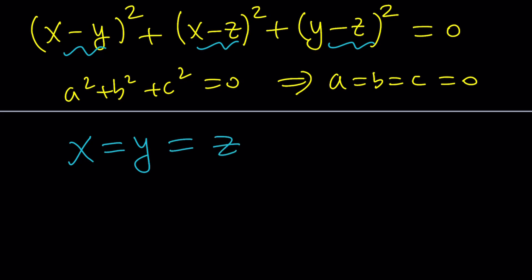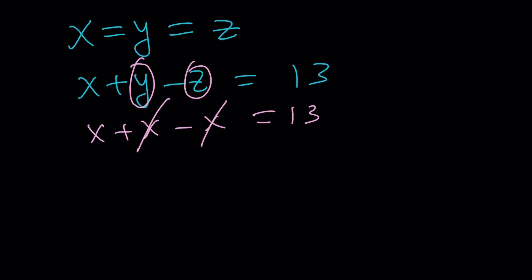And, looking at the second equation now, things become a lot easier. If these are all equal, why not set them all equal to x? So, this is x, and this is x, which means x plus x minus x equals 13. Ta-da! This gives me x equals 13, but also y equals 13, but also z equals 13.